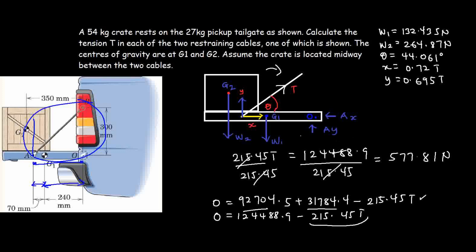The tension in each cable is therefore T = 577.281 Newtons. This is how to solve this question. Thank you very much for watching this video. Please don't forget to like and subscribe.